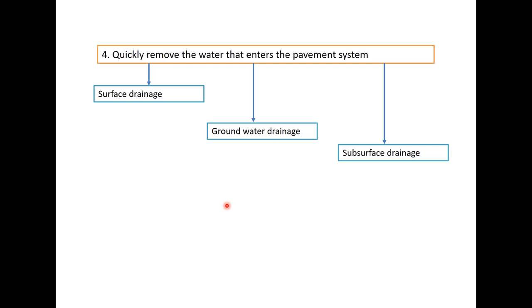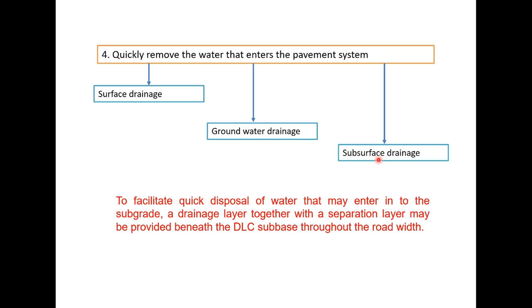The fourth approach is to carefully remove the water that enters the pavement system and that can be achieved through surface drainage or groundwater drainage or subsurface drainage. Now such systems are only effective for free water and water held by capillary forces in soil or in fines cannot be drained.